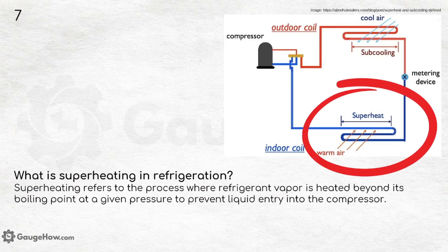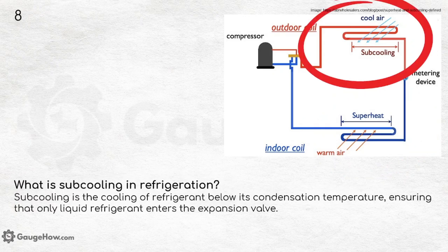What is superheating in refrigeration? Superheating refers to the process where refrigerant vapor is heated beyond its boiling point at a given pressure to prevent liquid entry into the compressor. What is subcooling? Subcooling is the cooling of refrigerant below its condensation temperature, ensuring that only liquid refrigerant enters the expansion valve. These two terms are also important when plotting points on the psychrometric chart.